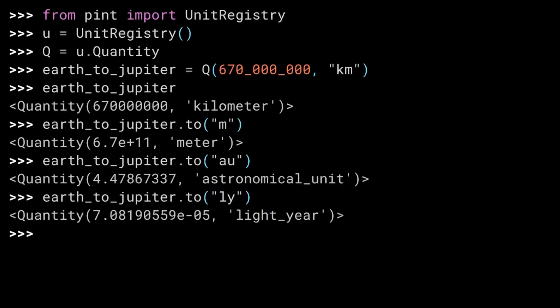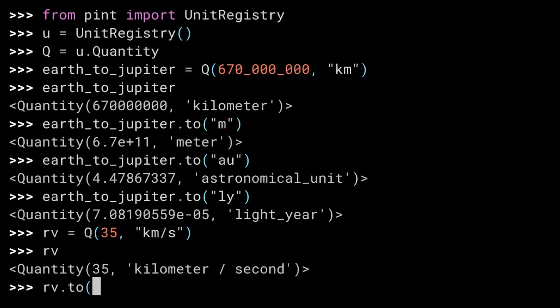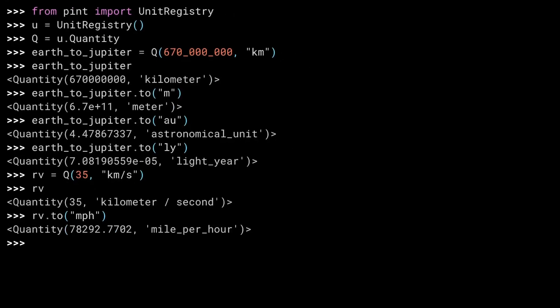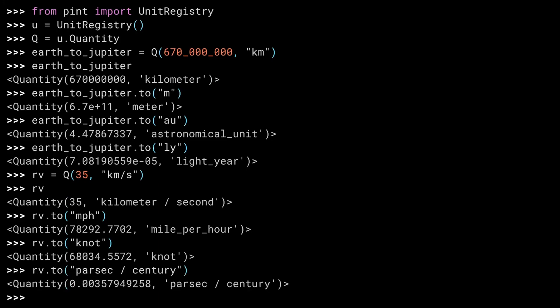Okay, that gives us our Jupiter distance. Now, let's launch our rocket. RV is our rocket's velocity, a speedy 35 kilometers per second. If you look at the value, Pint expands it out to the full name of the units. You can then use the to method on the velocity as well. Miles per hour? Knots? Or you can even get crazy and make your own unit up. As long as Pint understands the distance and time units, the rest is just division. So parsecs per century it is.